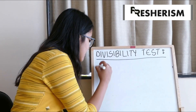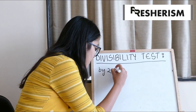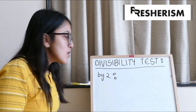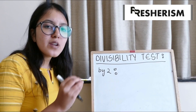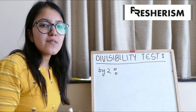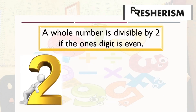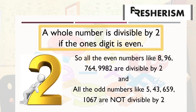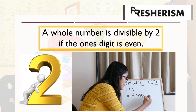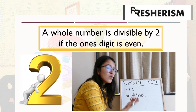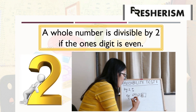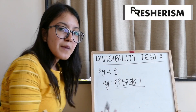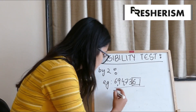First, divisibility test by 2. Any number which has an even number in its units place will be divisible by 2. For example, 694,736. At its units place, it has 6, which is an even number. Hence, the whole number would be divisible by 2.